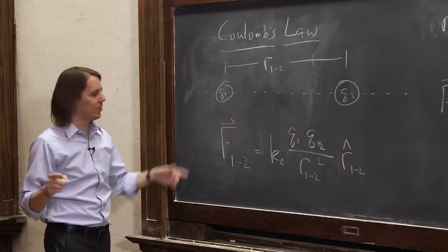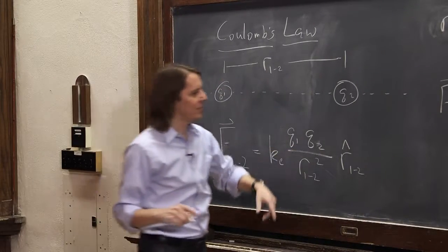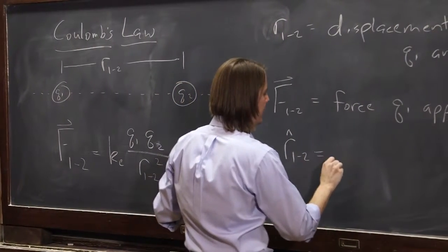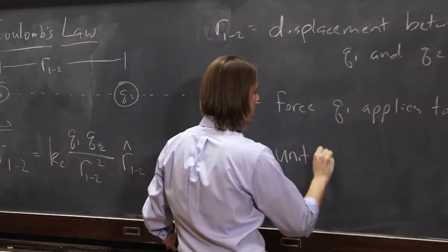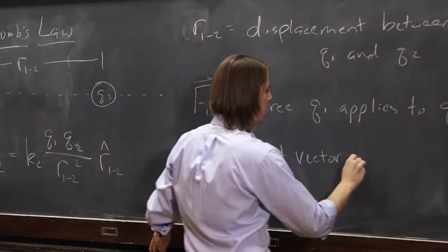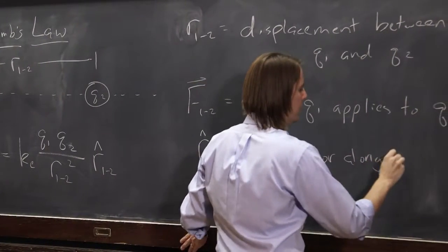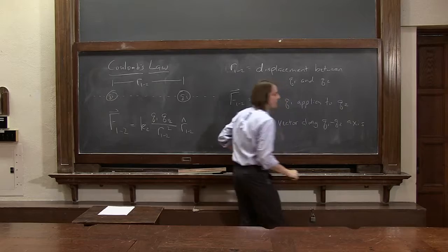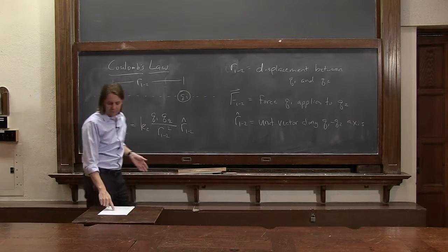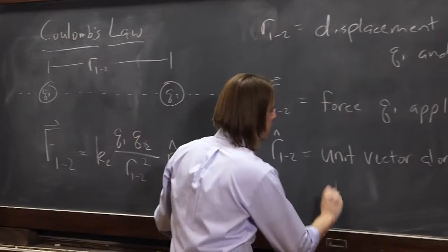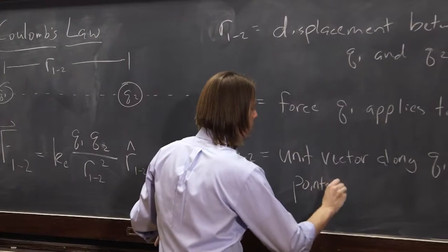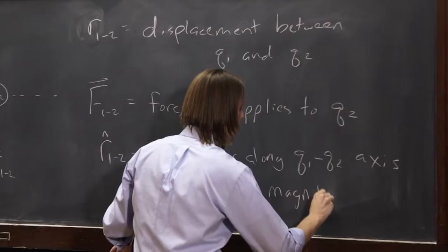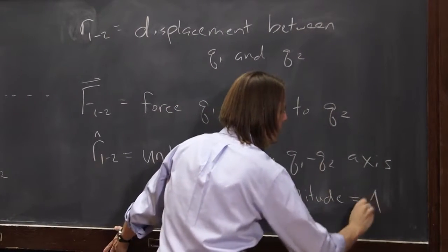So we have many kinds of hats here. We have vector symbols, we have nothing, and now we have this, R hat 1,2. And this is a unit vector along the Q1, Q2 axis. It's a unit vector. It points from 1 to 2, and its magnitude is equal to 1.